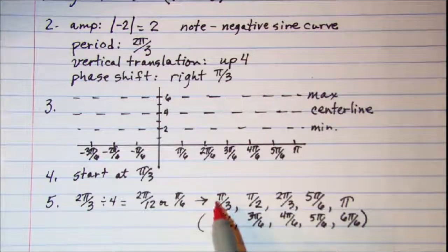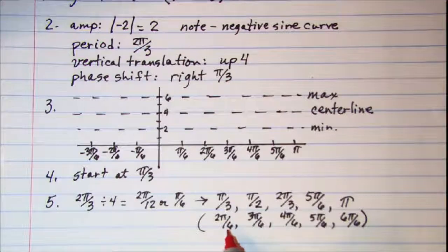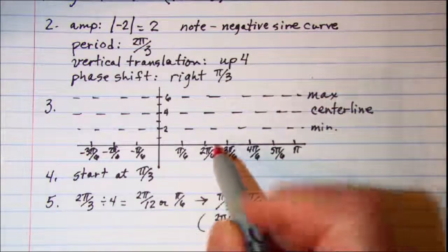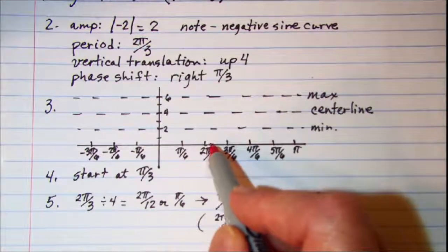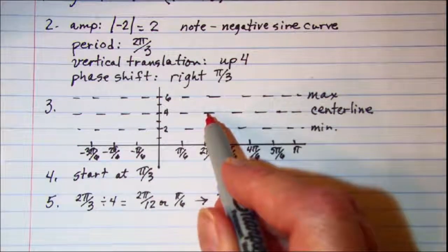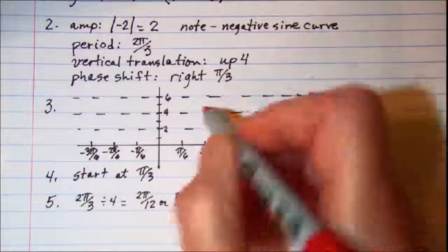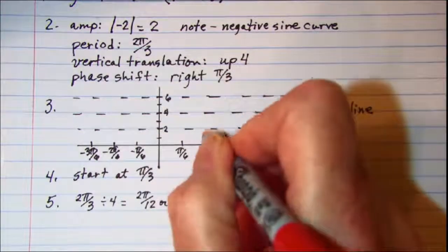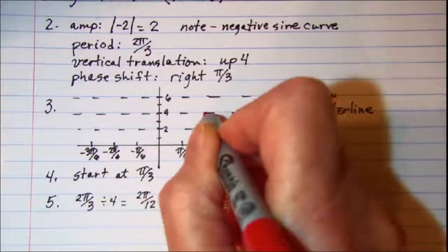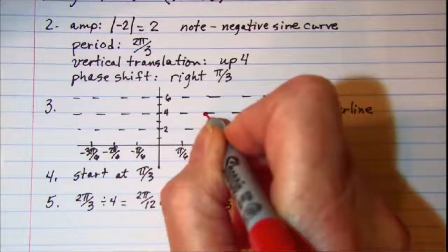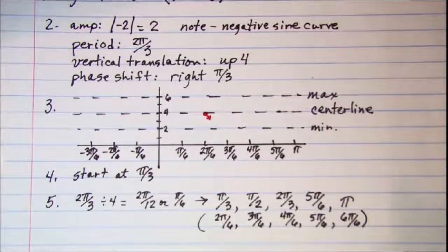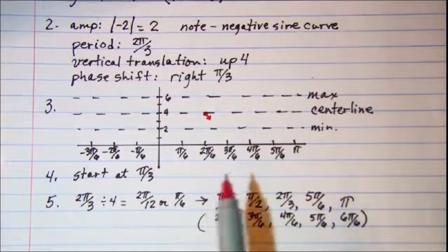So my starting point is at pi over 3, which is 2 pi over 6. It's going to be at the center line because it's a sine curve. But since it's a negative sine curve I'm going to have to start here at the center line and head down. I'm going to put a little arrow there just to remind myself that I'm going to have a negative sine curve.